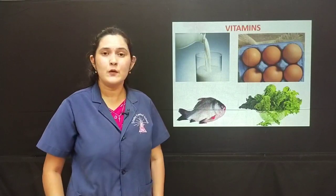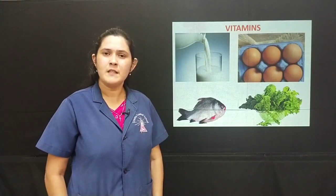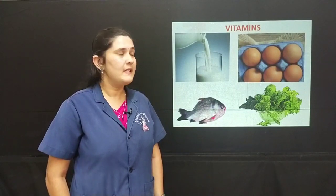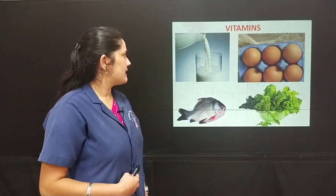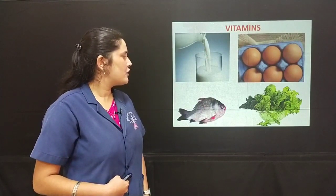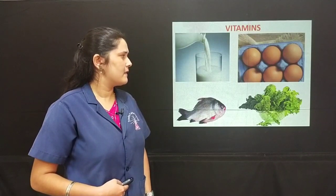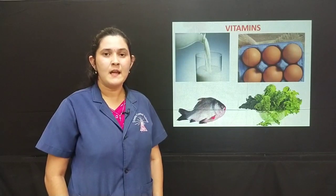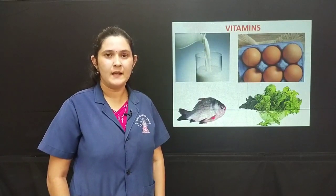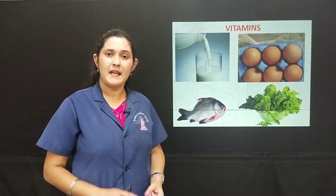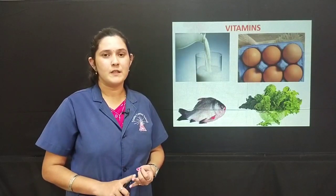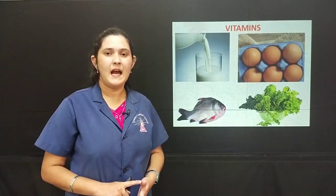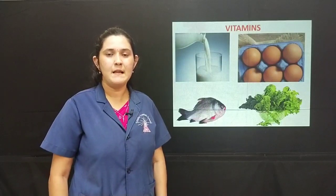The next nutrient we learn is vitamins. Vitamins are nutrients required in minute quantities. Here are the sources of vitamins — milk, eggs, fish and leafy vegetables. How do vitamins help our body? Vitamins ensure growth and good health. There are different types of vitamins: vitamin A, vitamin B, vitamin C, vitamin D, vitamin E and vitamin K. All these vitamins help our body.